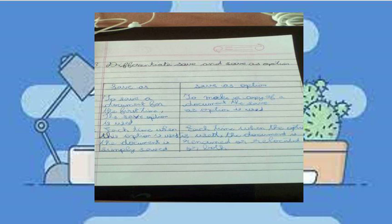Save As Option: To make a copy of the document, the Save As option is used. Each time when this option is used, the document is renamed or relocated or both.